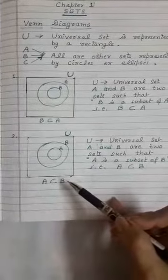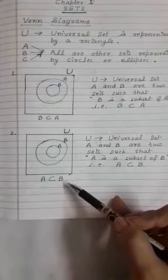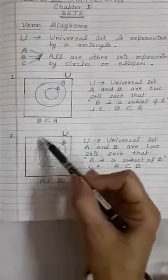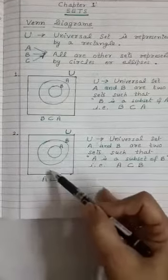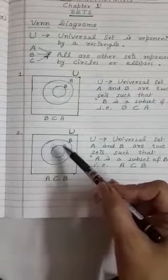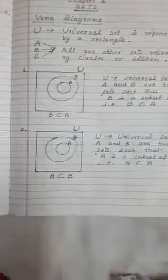Similarly, in the second one, A is a subset of B. You can see universal set again represented by a rectangle, and B is a set, A is a set, but all elements of A are in B. That's why it is inside B.